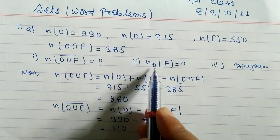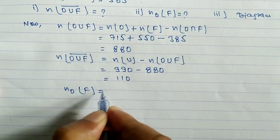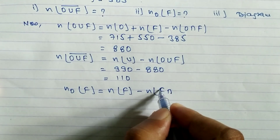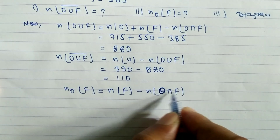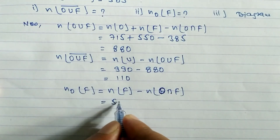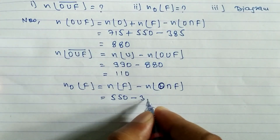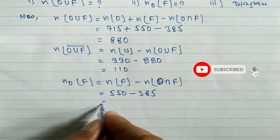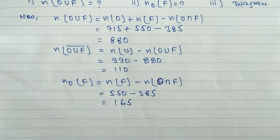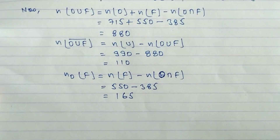Next, finding civil servants working in field only. The formula for 'only F' is: n(F) − n(F intersection O) = 550 − 385 = 165. So 165 civil servants were working in field only.